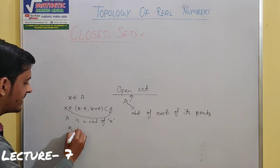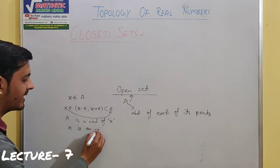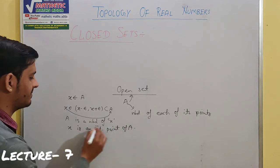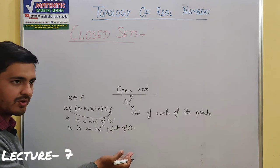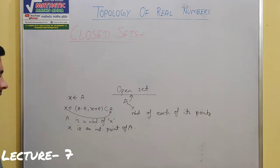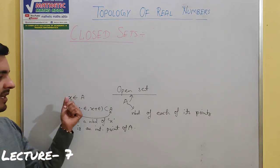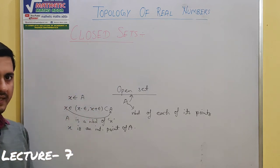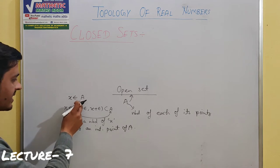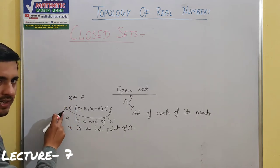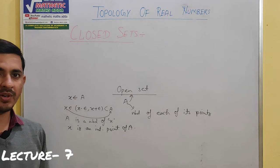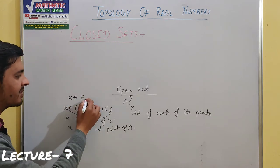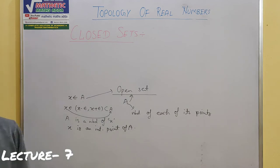Or we can say X is an Interior Point of A — X will be an interior point of A, or A will be the neighborhood of X. We took one particular point. If this property holds for all elements inside A — meaning A is a neighborhood of all the points it contains — then we call A an Open Set.